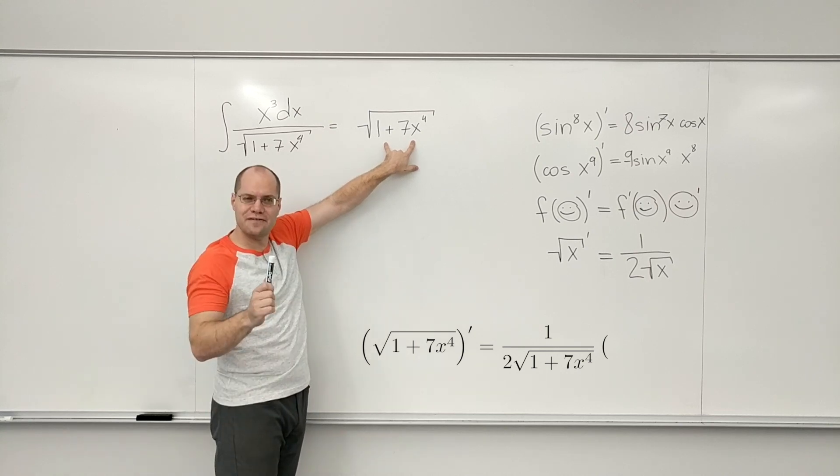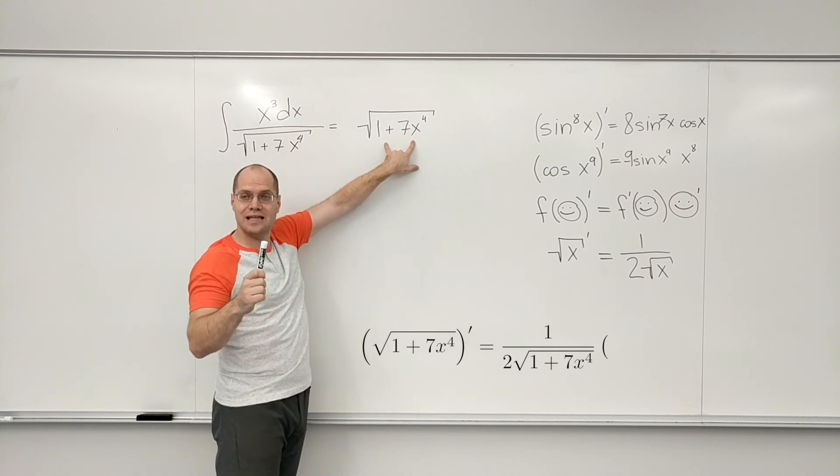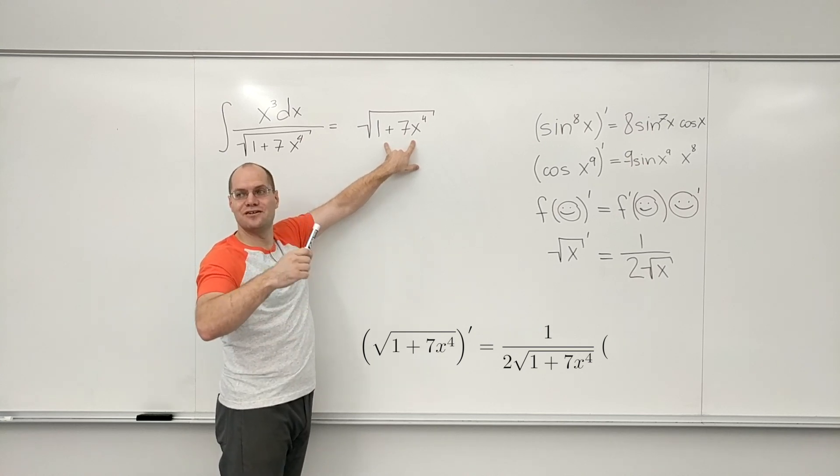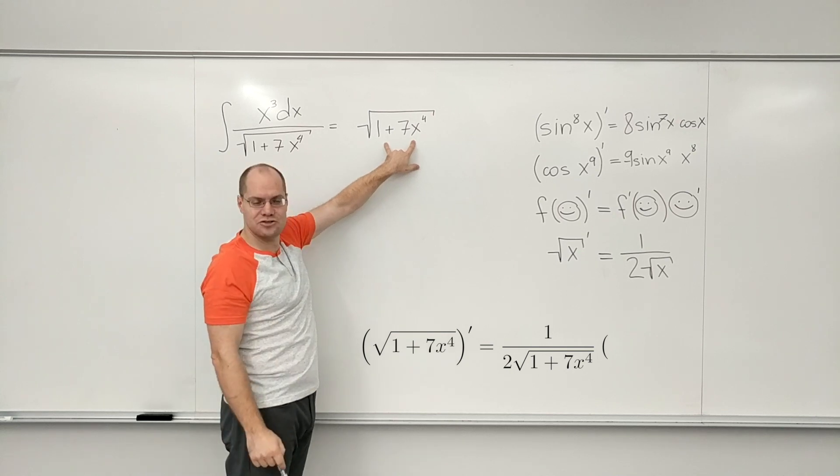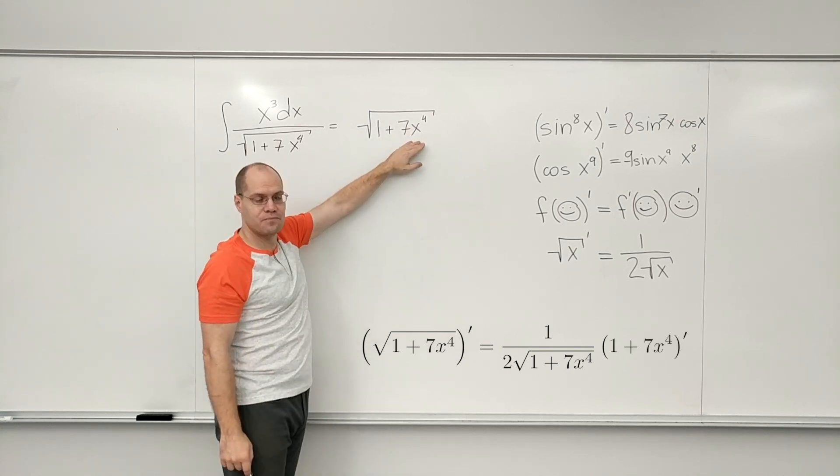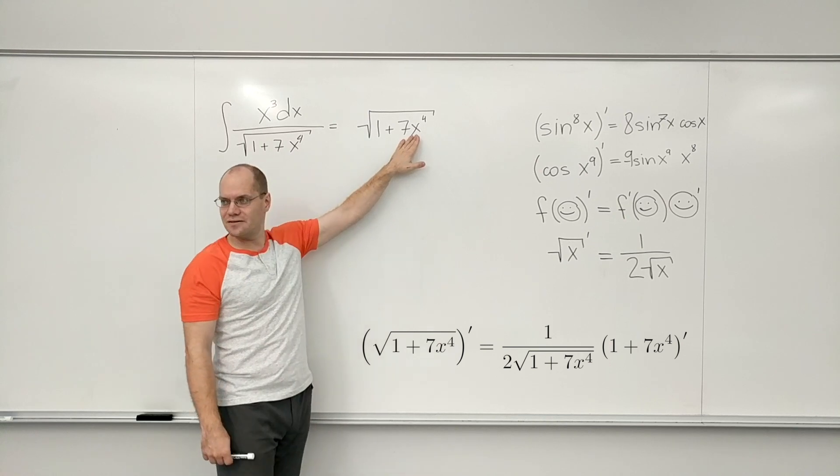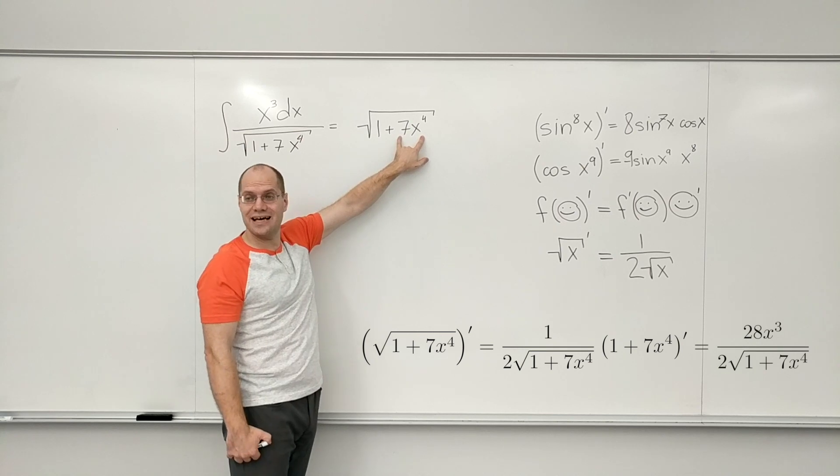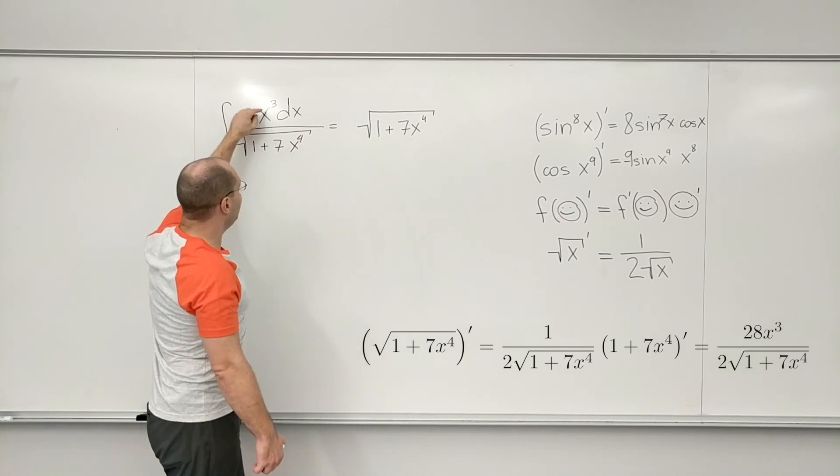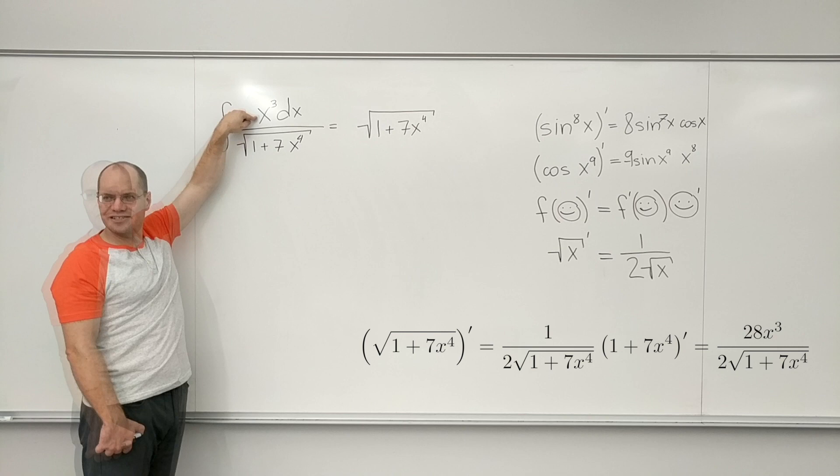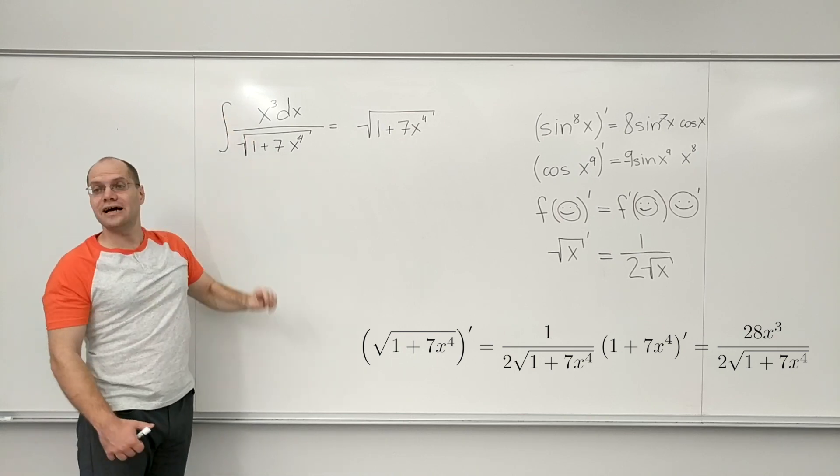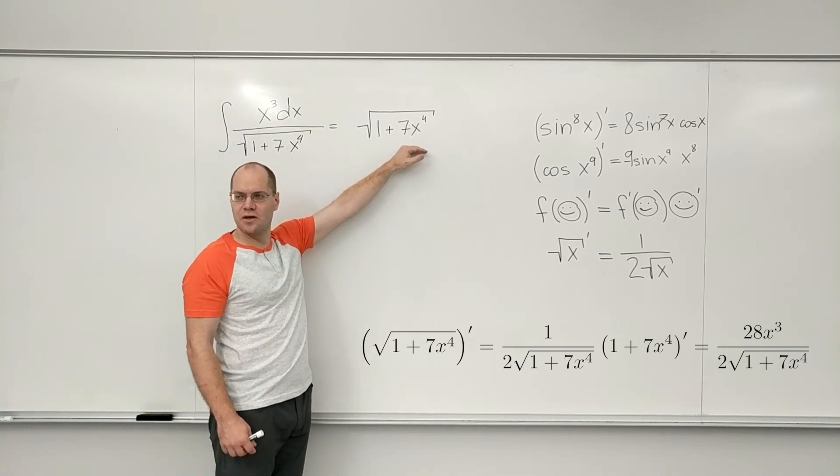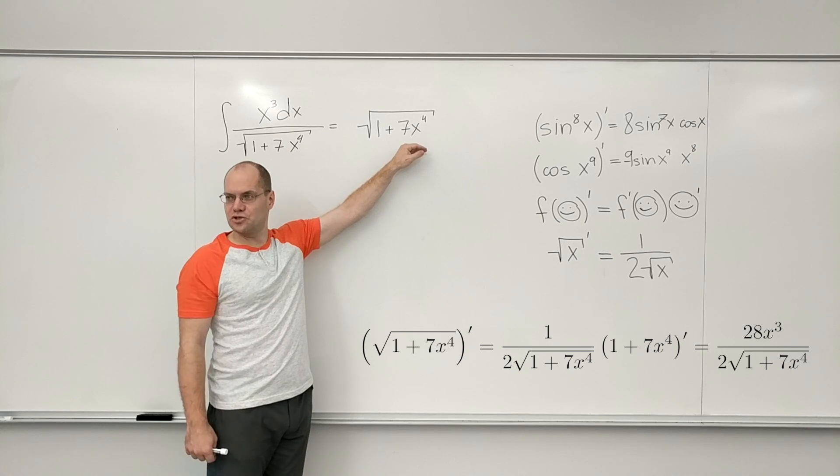But you have to be careful because that 1 half, now you have to make up for the 1 half you don't have. And you make up for it with a factor of 2. So you have to be careful. So I'll speak to that in just a moment. Times the derivative of what I have underneath the radical. 1 goes away. And so I end up with 28x cubed. And that's fantastic because I have x cubed. So what I don't have is that extra factor of 28 that this would produce. So I have to make up for it with 1 over 28.